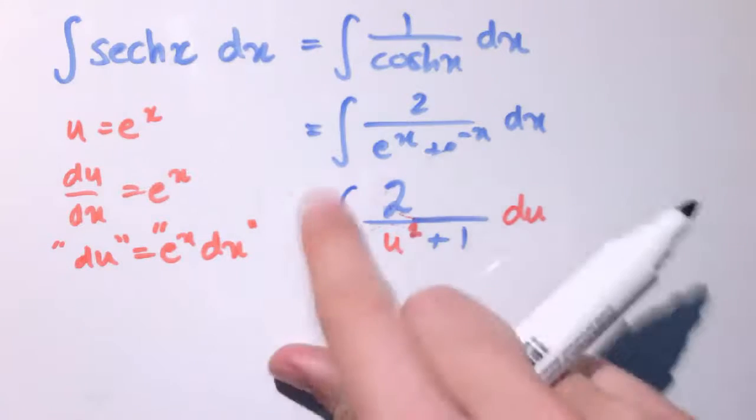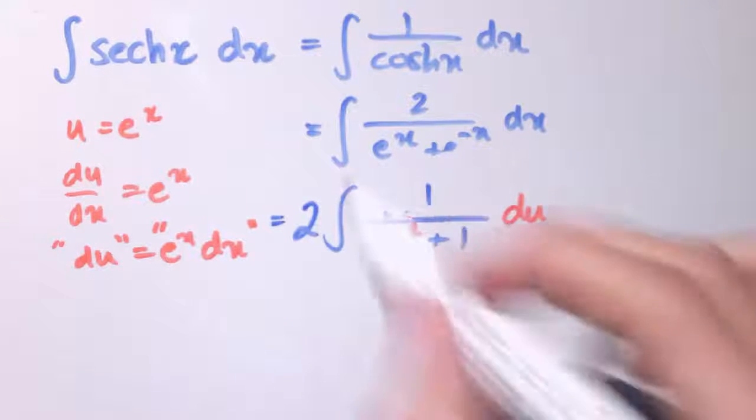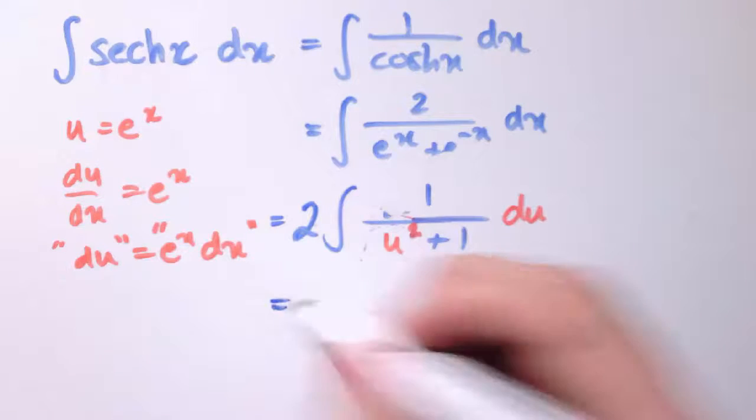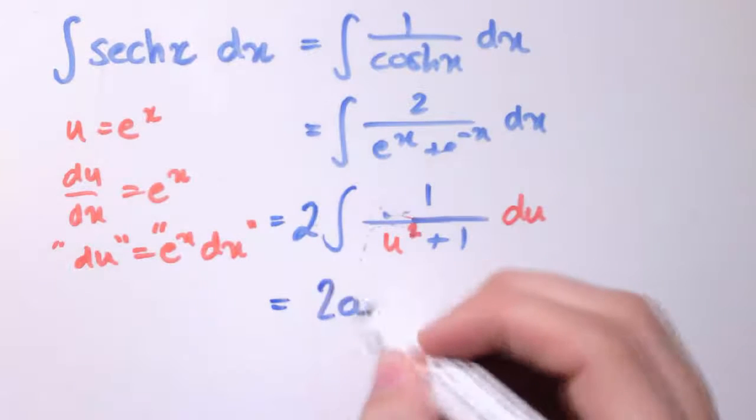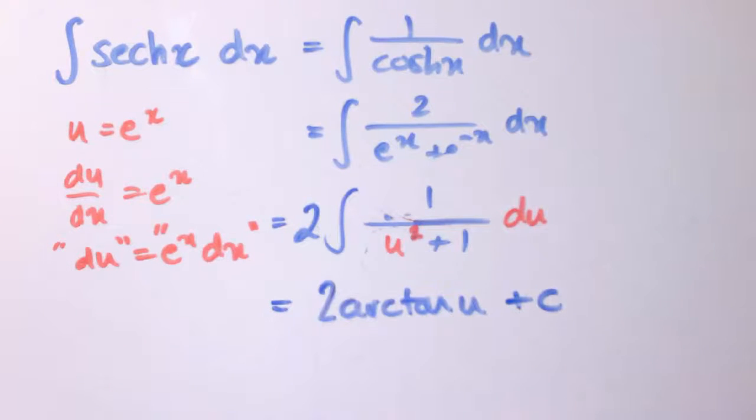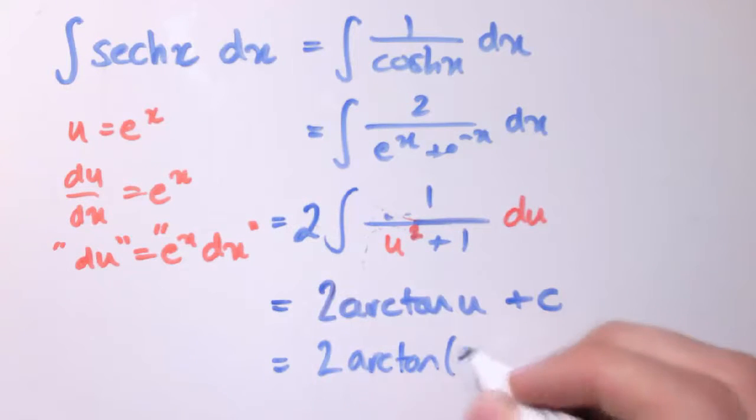And of course, this is just the same as 2 times the integral of 1 over u^2 plus 1 du. So hopefully that form is familiar from what we've done before. That is just arctan of u. So this gives us 2 arctan(u) plus our arbitrary constant. And if you want to put that back in terms of x, then that's 2 arctan(e^x) plus c.